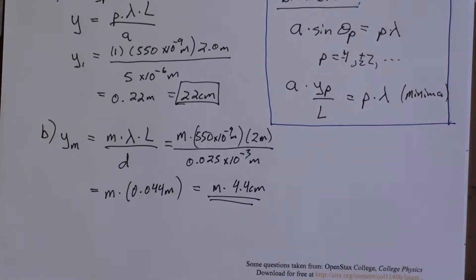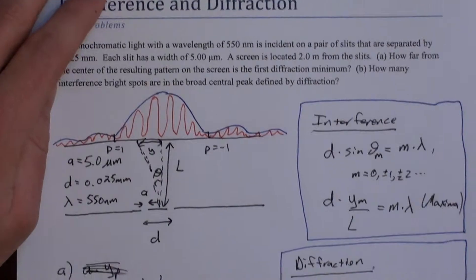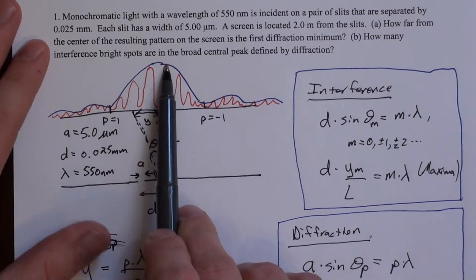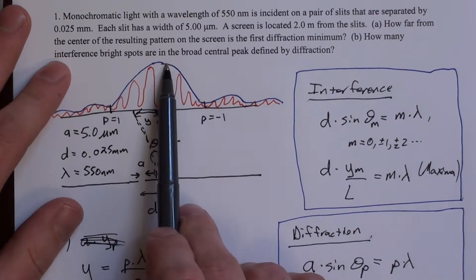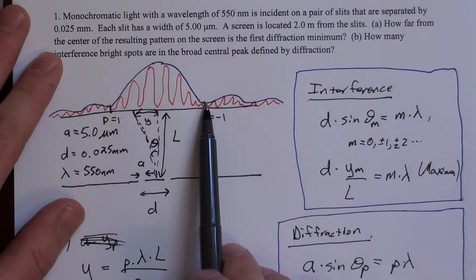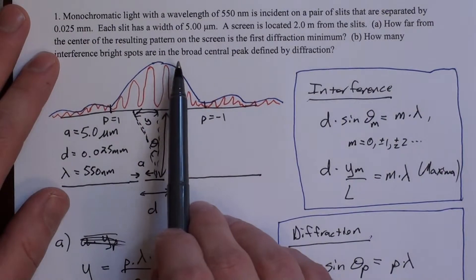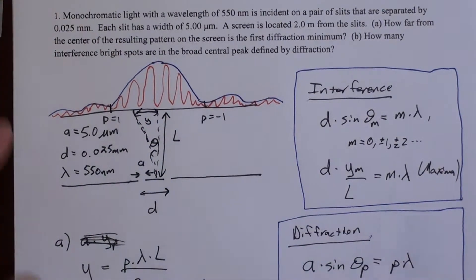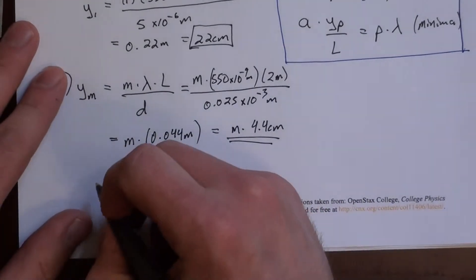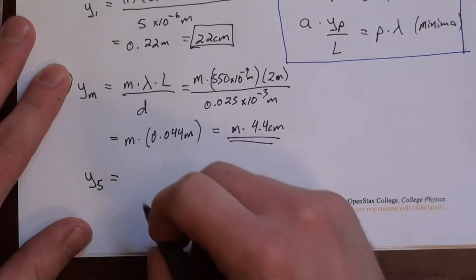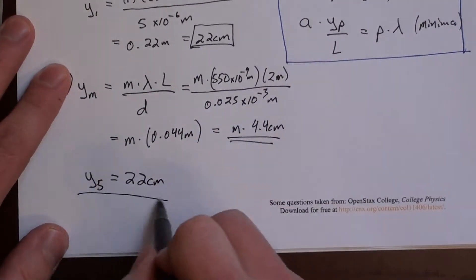So this actually gives me a way to say what M pushes these fringes beyond the edge of this pattern. Because M equals 0 is the center. M equals 1 is the first one, and that gives me 4.4 centimeters. Remember out here is 22 centimeters, so I've got a way to go. I can go another one, so M equals 2 is 8.8, and so forth. And it turns out, for M equals 5, Y5 is actually 22 centimeters.